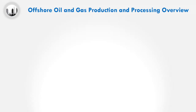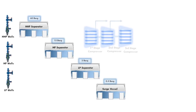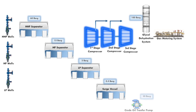An offshore production facility typically consists of the well heads, separators, compressors, gas dehydration system, gas metering system, crude oil transfer pump, and liquid metering system.